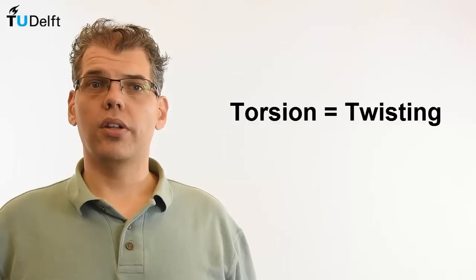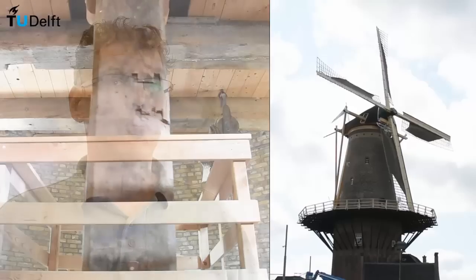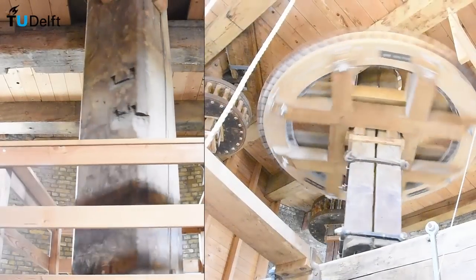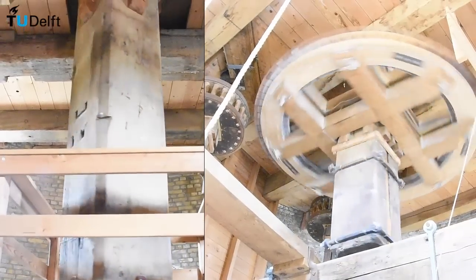Torsional loading is characterized by the application of a twisting moment along the axis of an object. In our windmill example, the rotation of the blades is transmitted through rotating wooden gears and shafts to the base of the mill where the power can be exploited.